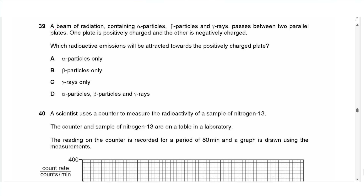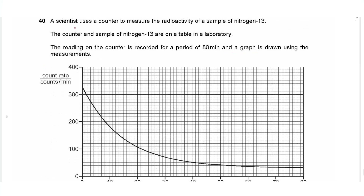Question 39: A beam of radiation containing alpha particles, beta particles, and gamma rays passes between two charged parallel plates. The negatively charged emission is attracted toward the positively charged plate — that is the beta particle only.